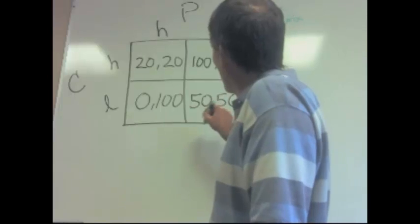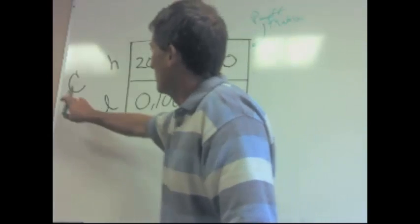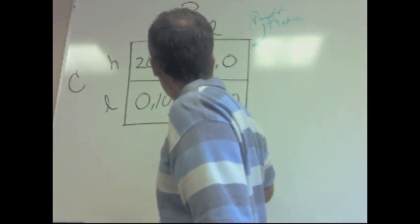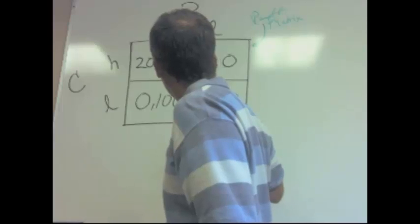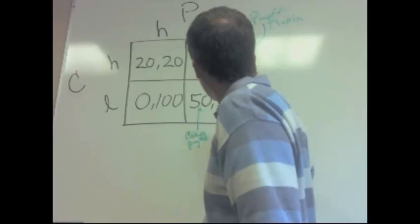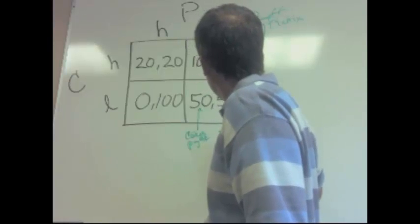And within each cell, the first entry is always the player to the left. So this, in this case here, is Coke's payoff. And the second entry is the player up top, whoever that is. In this case, it's Pepsi's.